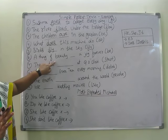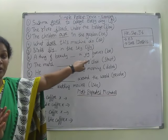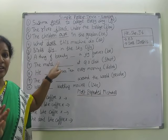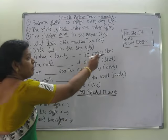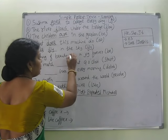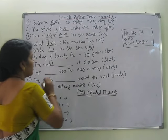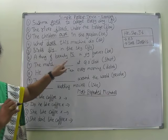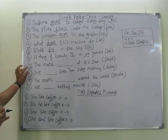A thing of beauty ___ a joy forever. 'Be' is given, but we don't use 'be' here. So: A thing of beauty is a joy forever.